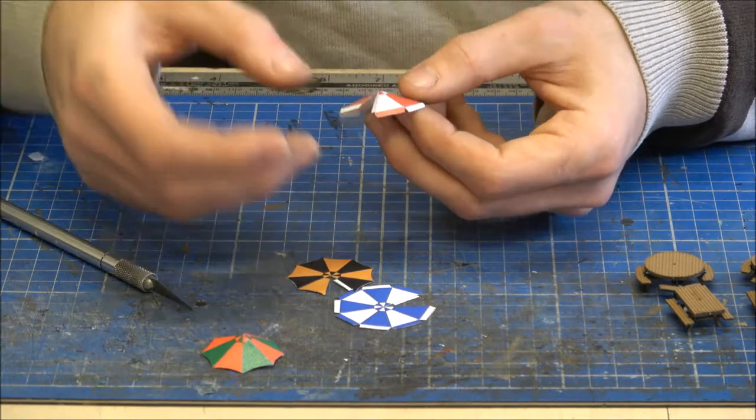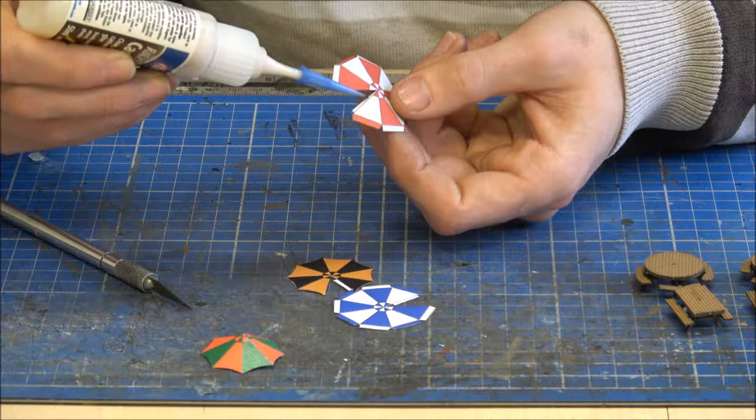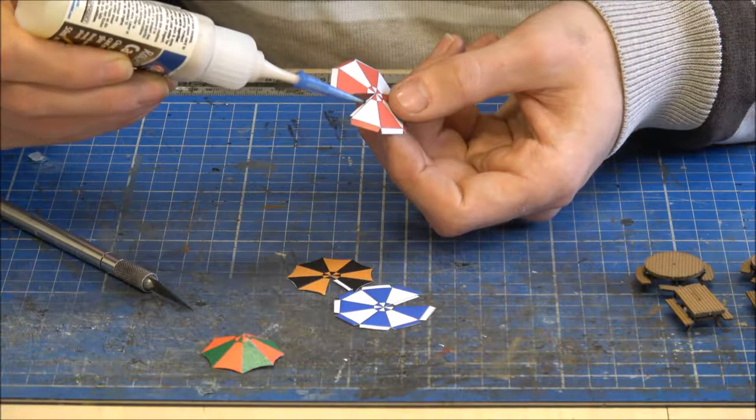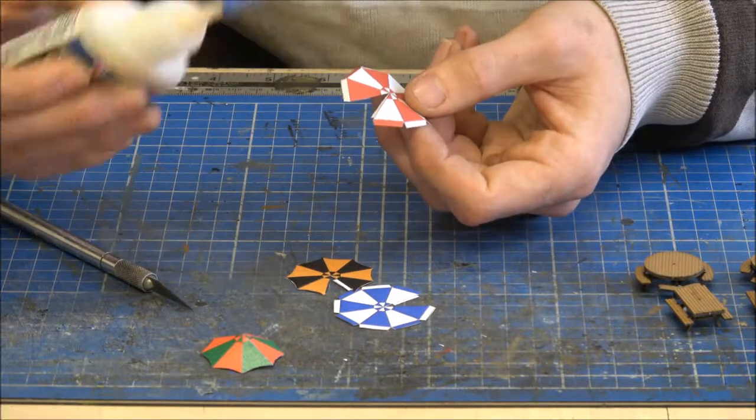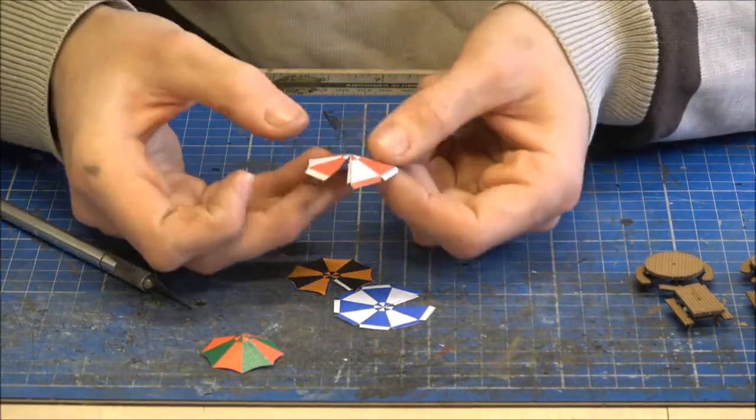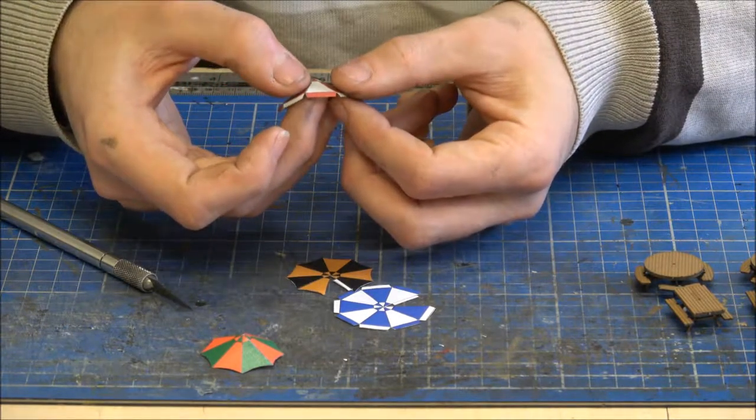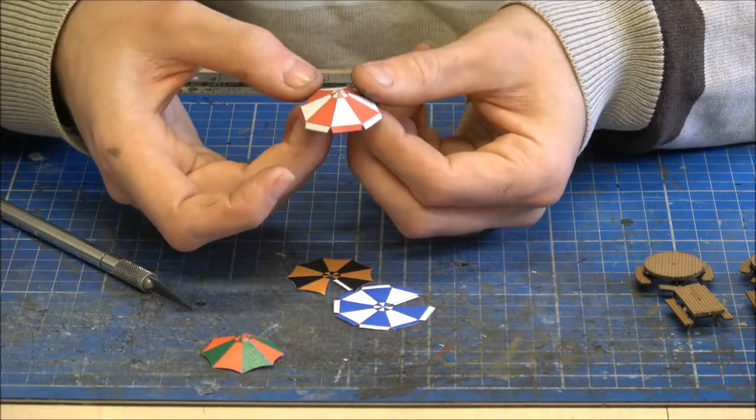And again a little bit of glue on the tab. So you don't need to go mad with the glue, just enough on there because it will grab the paper very quickly and create a nice join.